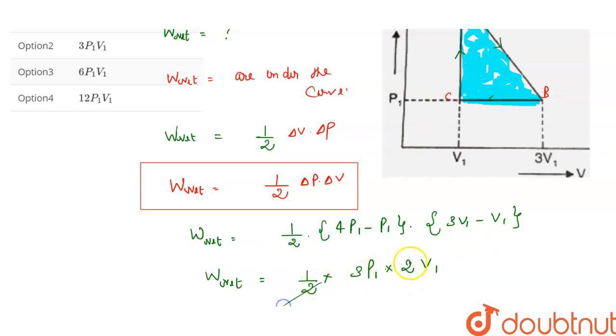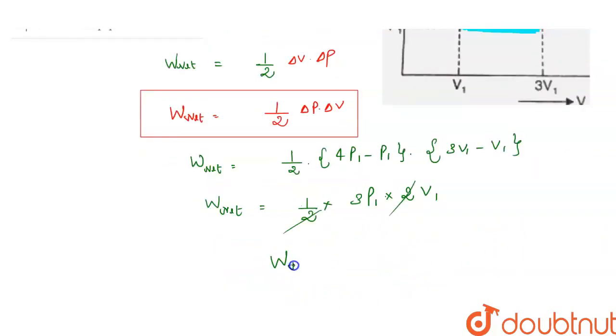So 2 and 2 cancel out, so here network done in this process